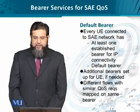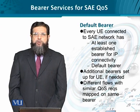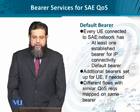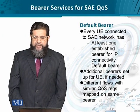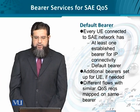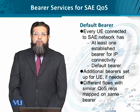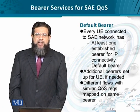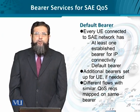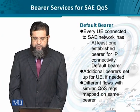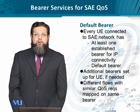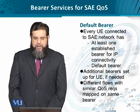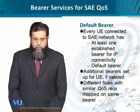Whenever a user equipment enters into a certain network, after necessary connection and registration, each user equipment is entitled to at least one basic bearer, known as the default bearer, for providing IP connectivity. We are looking at these bearers because they establish the signaling and carry data traffic, which could be voice or any other type of data. By default, at least one bearer is established — the default bearer. In addition, if there is a requirement, other bearers can be established. Each bearer could have different quality of service requirements.